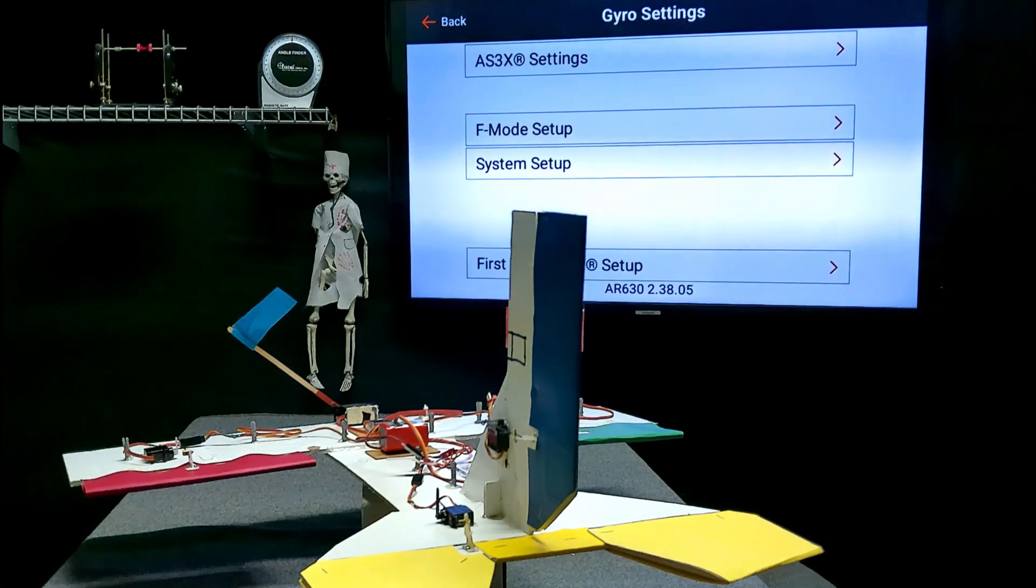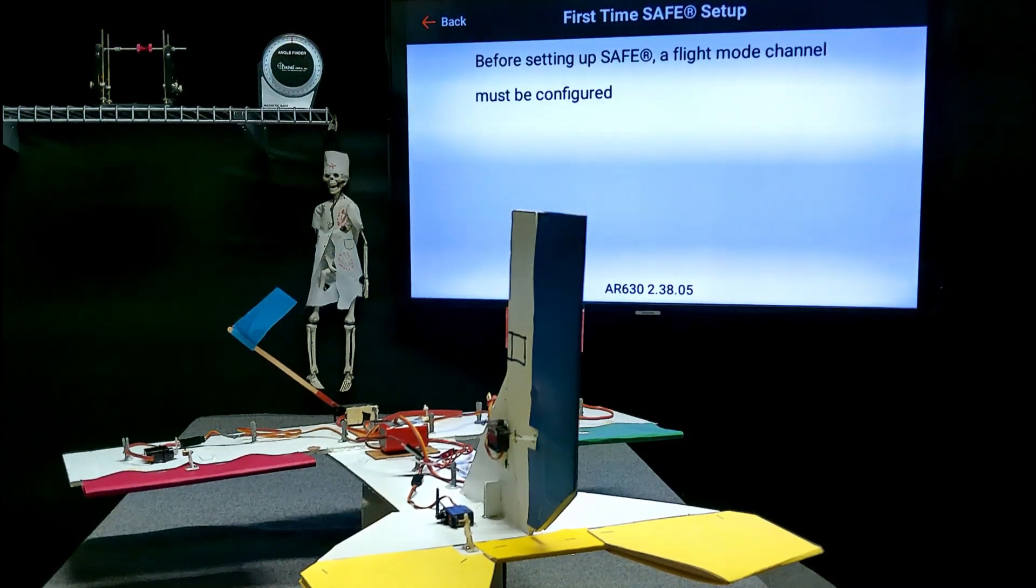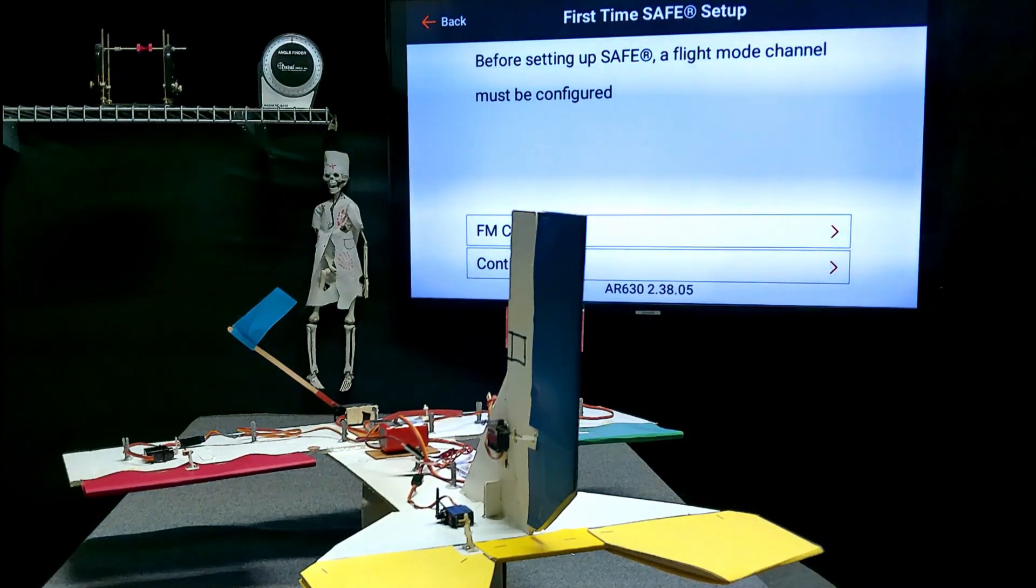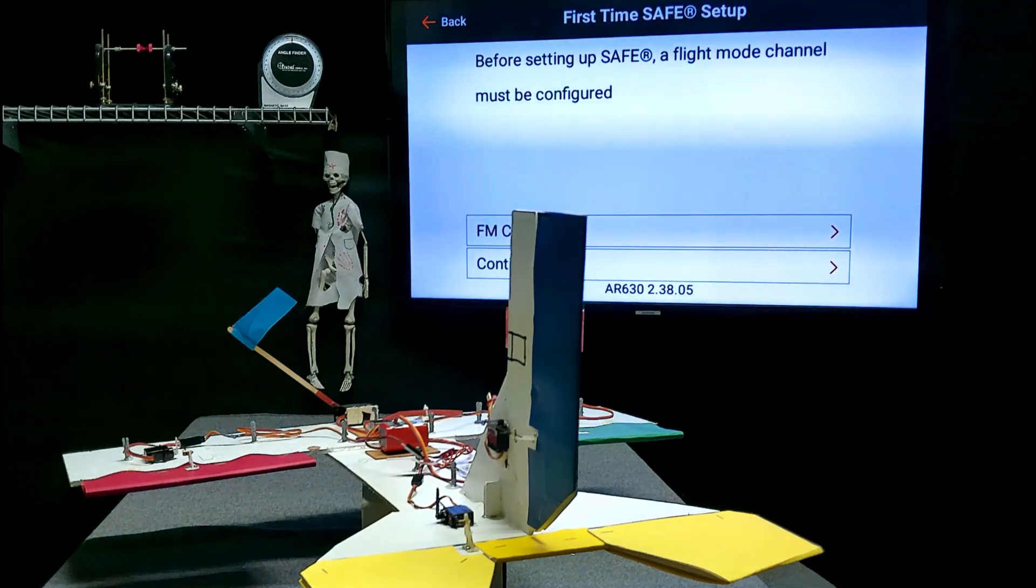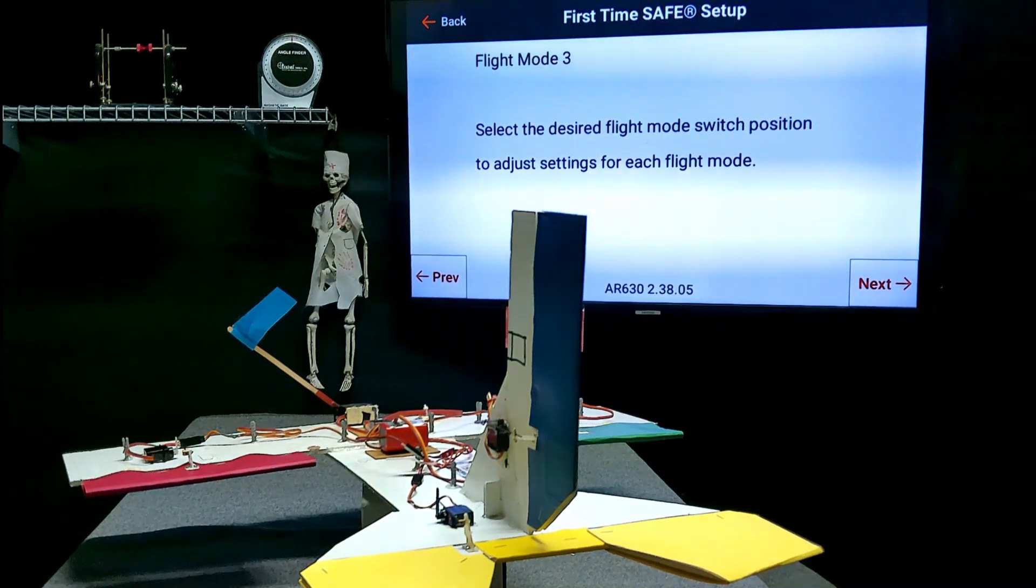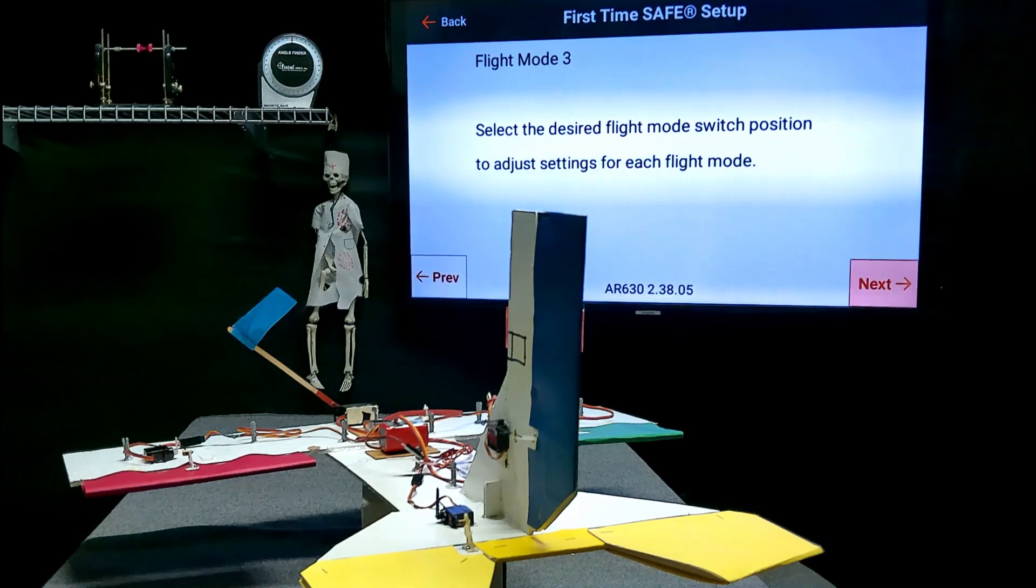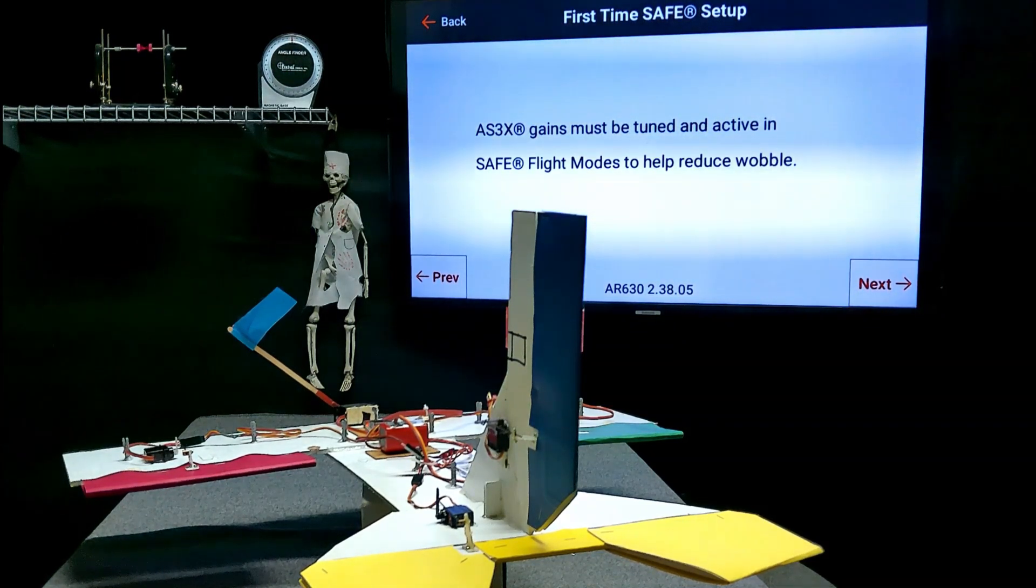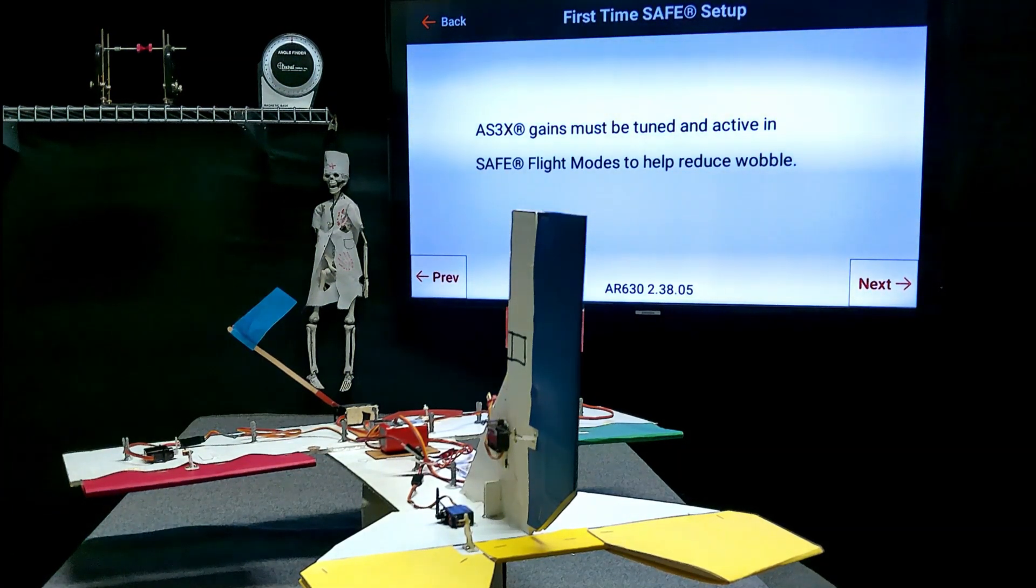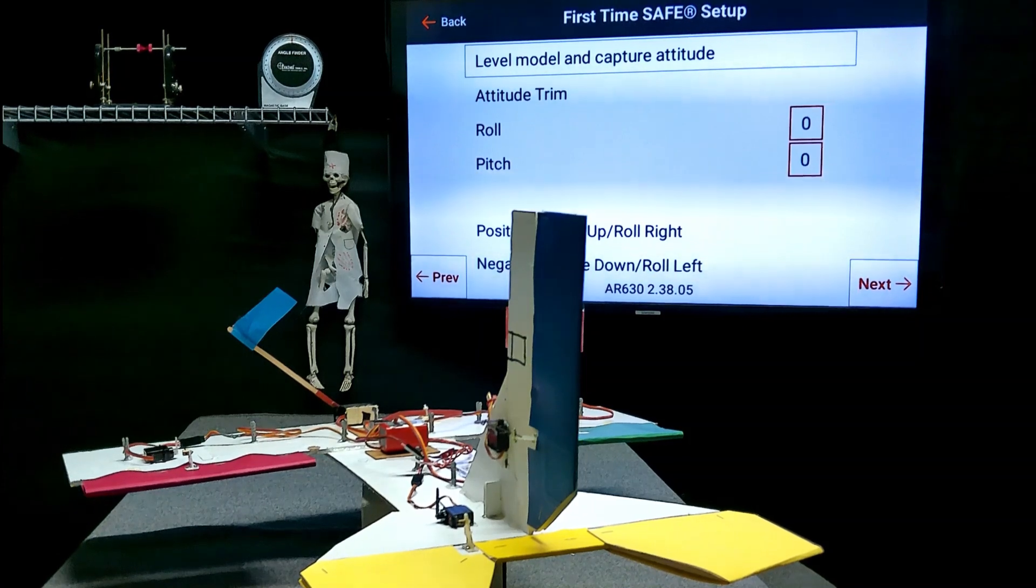Back button, first time safe setup. Pretty important right here. Before setting up safe, a flight mode channel must be configured. We've already done that, so we've got to continue. Select the desired flight mode switch position to adjust settings for each flight mode. Next. Your AS3X gains must be tuned. That's more we can go into in another video. Next.